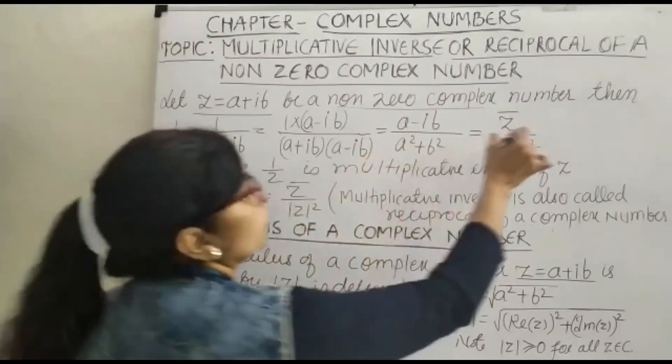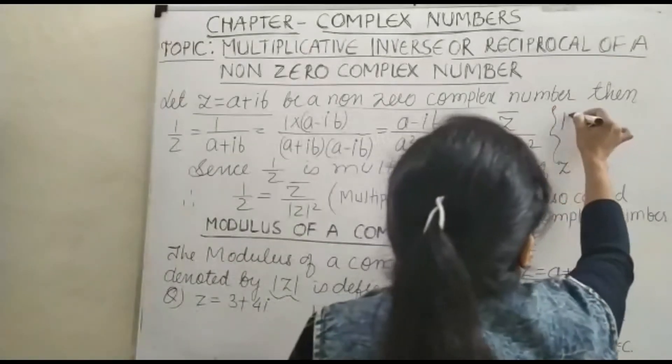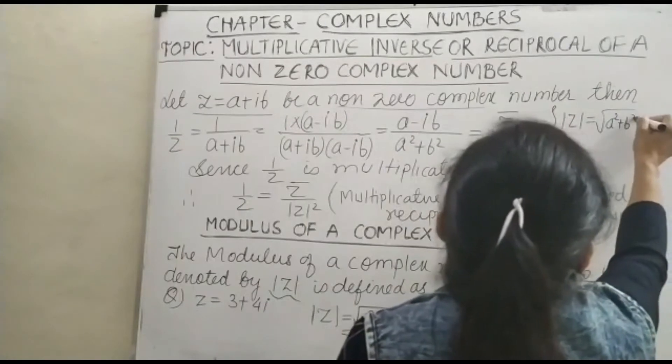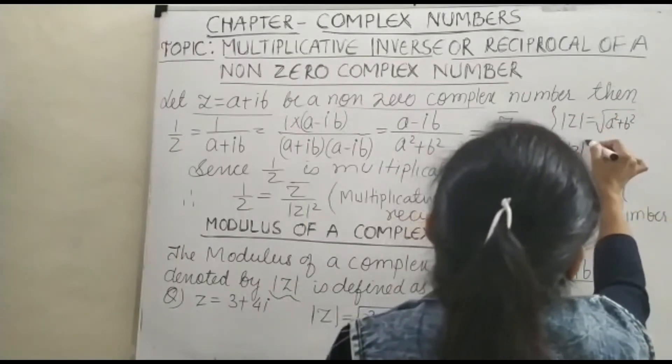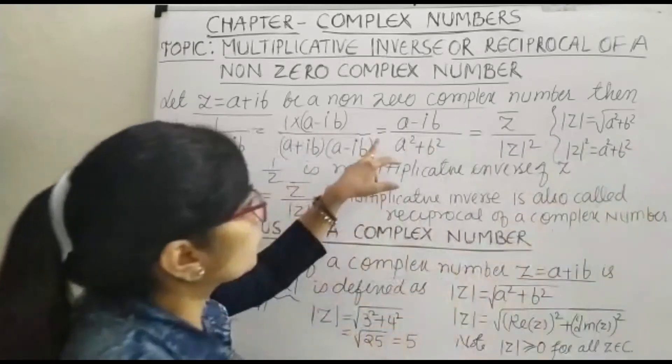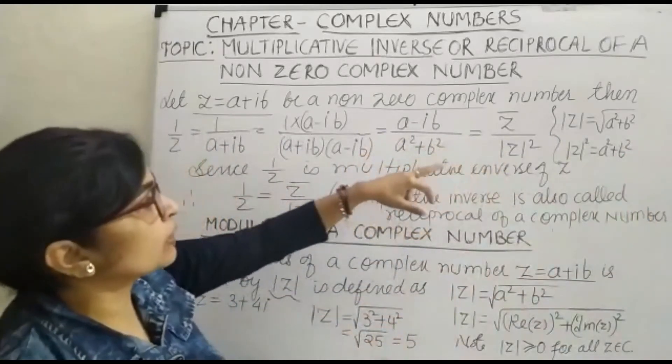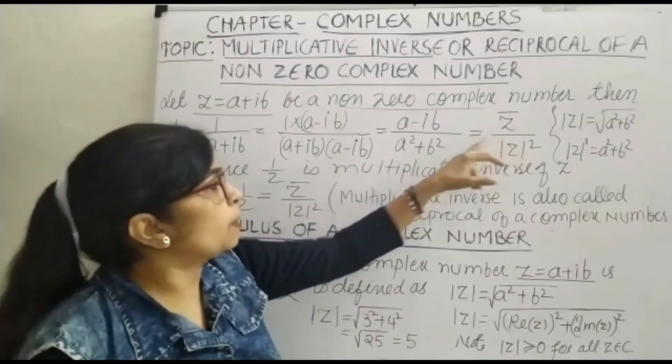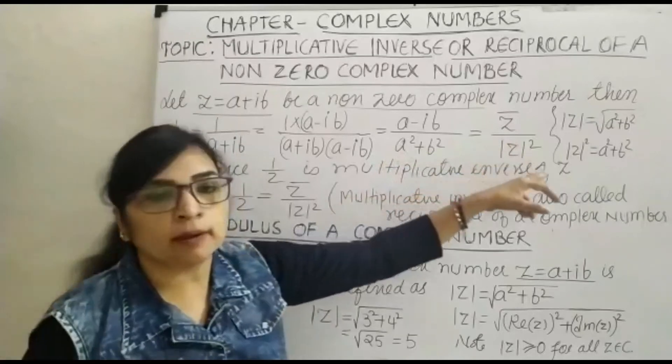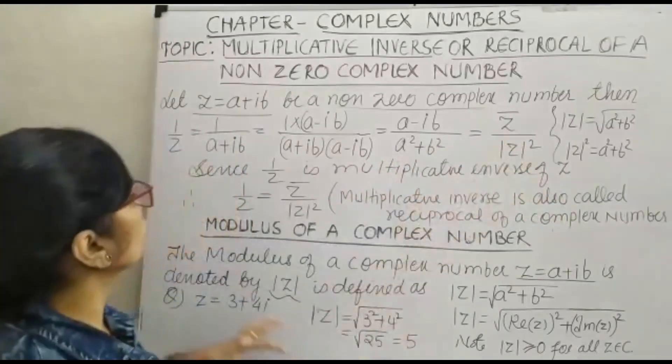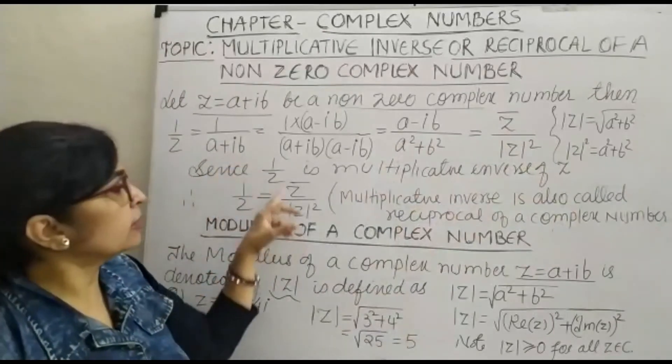Now you can see that modulus of z equals under root a squared plus b squared. So a squared plus b squared equals modulus of z the whole squared. This can be replaced by conjugate of z upon modulus of z the whole squared.